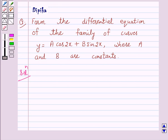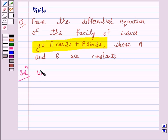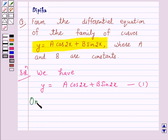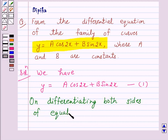Now we are given the equation of the family of curves y equals A cos 2x plus B sin 2x. So we have y equals A cos 2x plus B sin 2x. Let us give this as equation number 1. Now on differentiating both sides of equation 1 with respect to x successively.